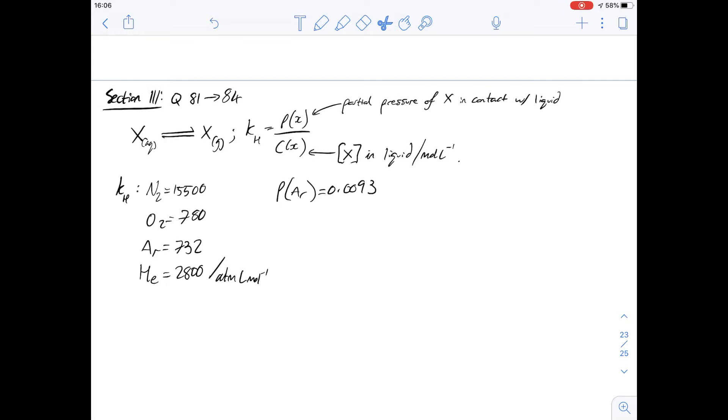I've written down all the relevant information, and we'll start off with question 81, which says that all of the dissolved air is extracted from a one liter sample of blood plasma which has been equilibrated with air at 25 degrees C. The extracted air is found to consist of 12.3 milliliters of nitrogen and 6.3 milliliters of oxygen.